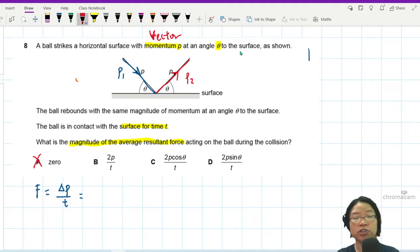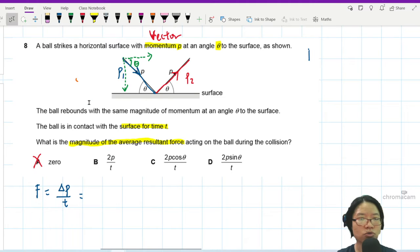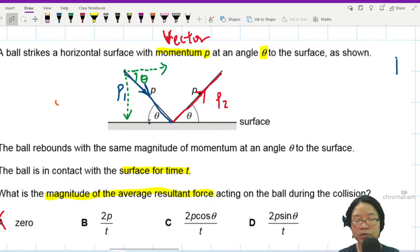So we need to find a change in momentum. Whenever there's a vector change in momentum, you have two choices. You either draw a vector diagram or you resolve your vectors. I like resolving because I teach physics. So I'm going to split p into vertical and horizontal component like this. Here would be theta.